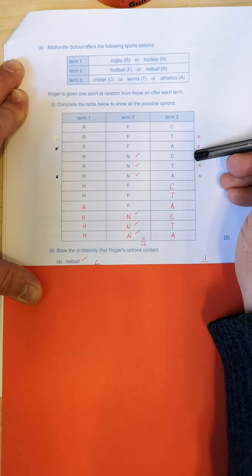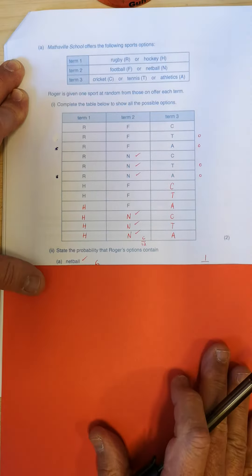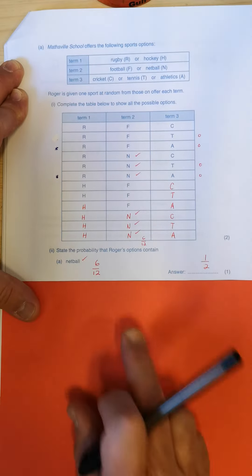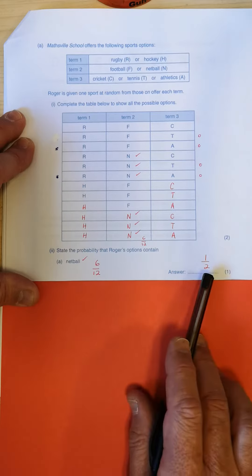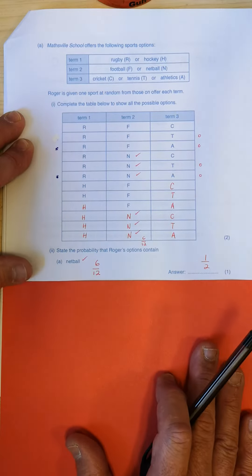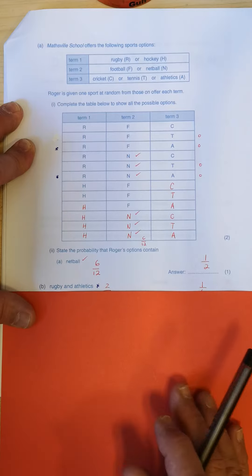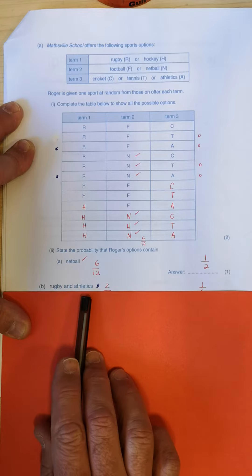One, two, three, four, five, six, seven, eight, nine, ten, eleven, twelve. Twelve options. So six of the twelve gives me a half. It's not wrong to say six twelfths, but we normally simplify it down to its simplest term. Right, now,